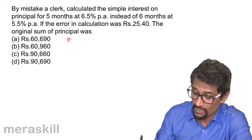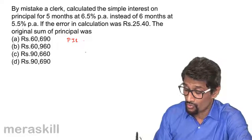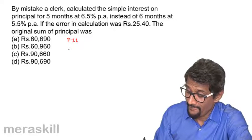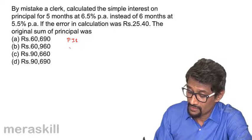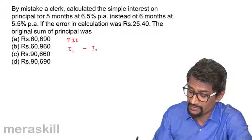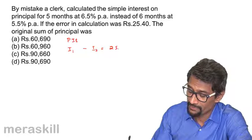So we know the formula P-I-T. It could be—we have, in the first case, wrong interest minus correct interest turns out to be 25.40. Here we need to worry about which is bigger, which is smaller. Accordingly, it will just become negative or positive.